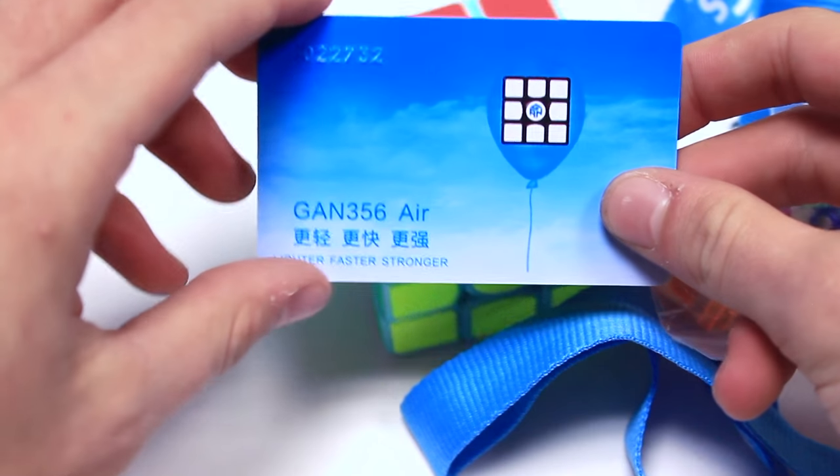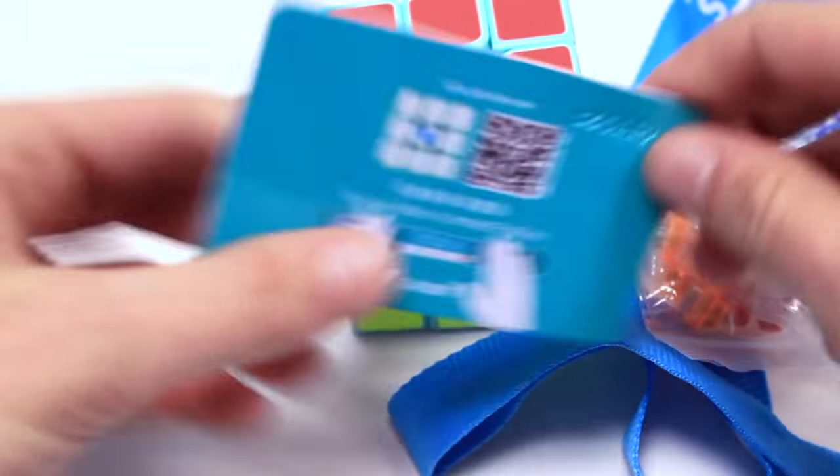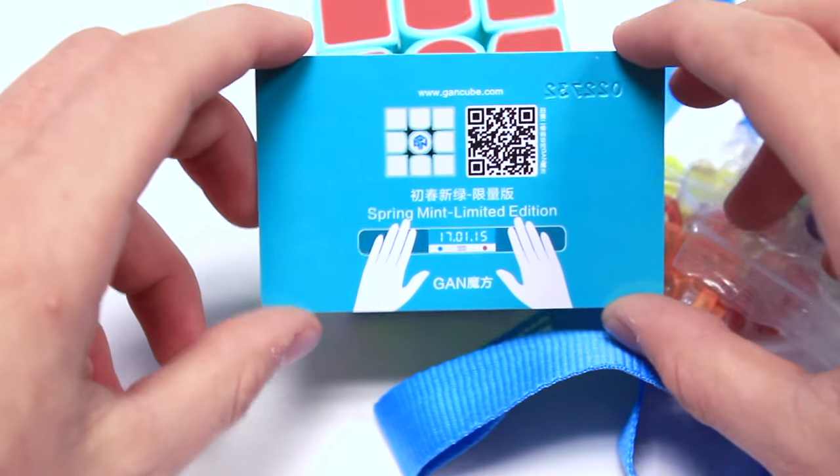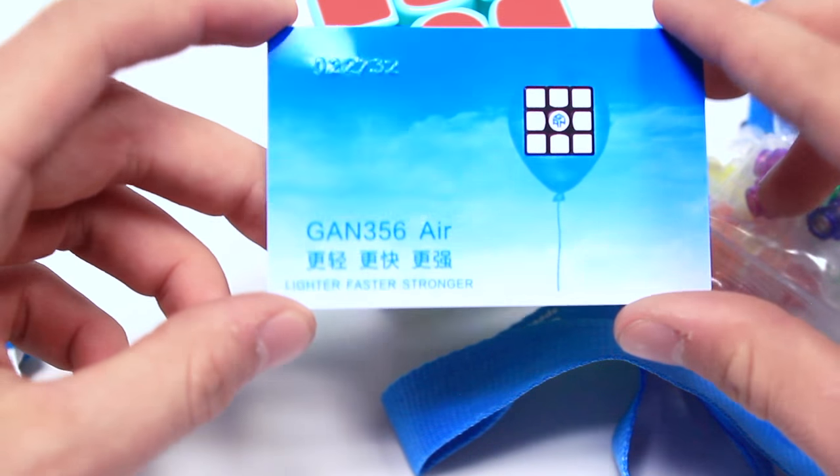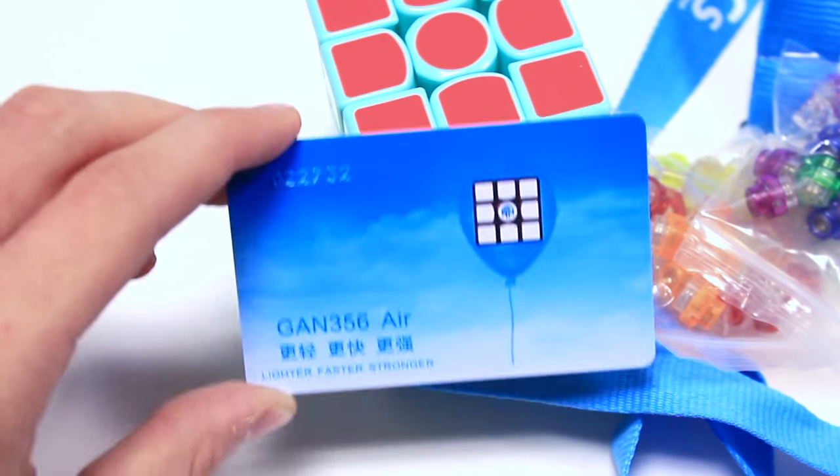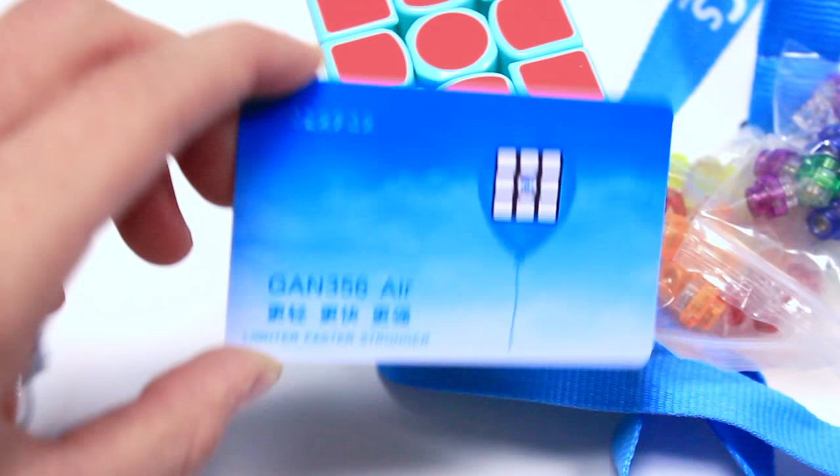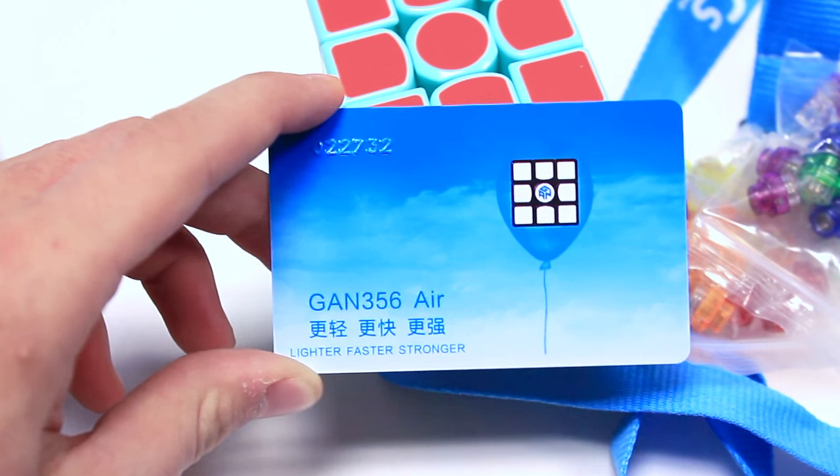Oh yeah. Almost forgot to even do the whole unboxing. I got this little card so that I can be like a member of the Gan Club or something like that. I don't know. Okay. What's the deal with the cards, Red? Come on. I don't know. Look what number you are.